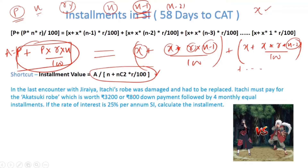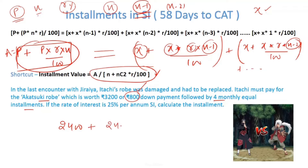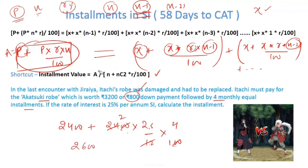Let's use this formula in a question. In the last encounter with Jiraiya, Itachi's robe was damaged. Itachi must pay for the Akatsuki robe worth 3200 rupees — either 800 down payment followed by four monthly equal installments at 25% annual interest. Since 800 is paid upfront, the effective principal becomes 2400. The amount = 2400 + 2400 × (25/12) × 4 / 100. Solving: this simplifies to 2400 + 200 = 2600.